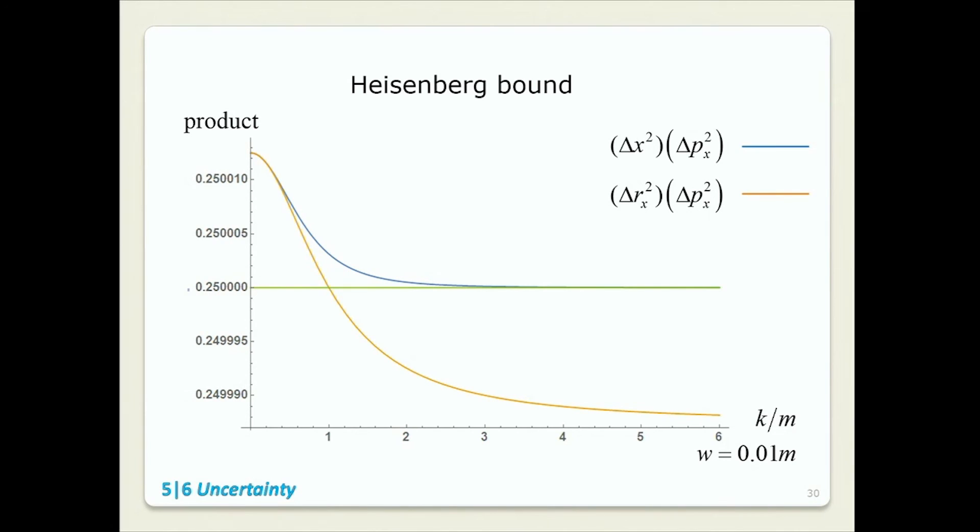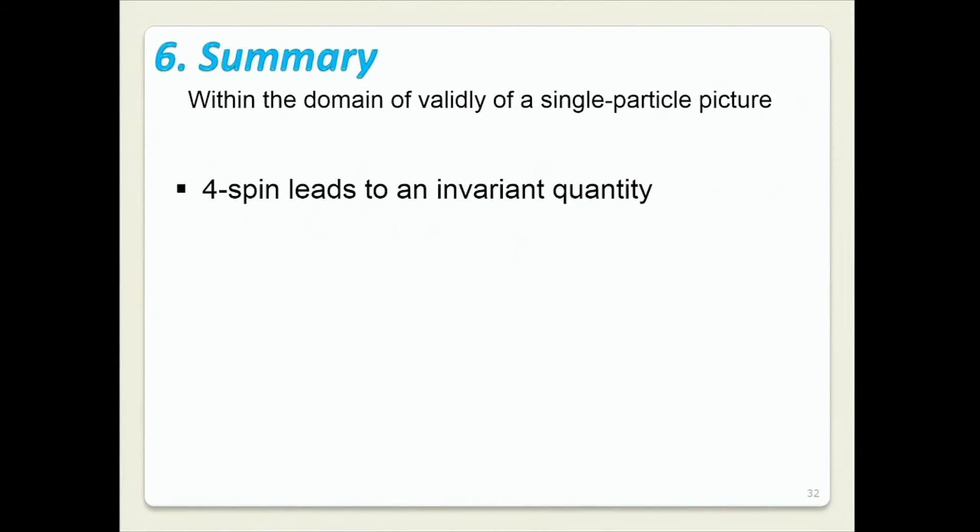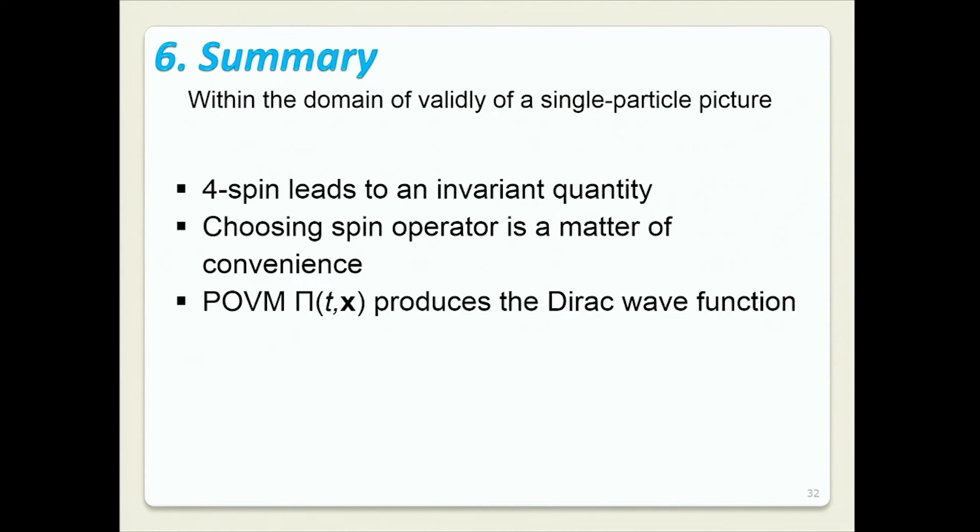But if we go for energy POVM, very slightly, we go under it. Now, in this case, the spread in momentum was 1% of the rest mass. And that's where we've got it. Again, whether it does it mean that it's a bad quantity, I don't know. But that's interesting. All right. So let's summarize. Four spin leads to an invariant quantity. I still have to figure out what to do with it. But choosing which spin operator to work with is mostly a matter of taste. We can get Dirac wave function or something which is very close to it, but not close enough not to break Heisenberg relationships.